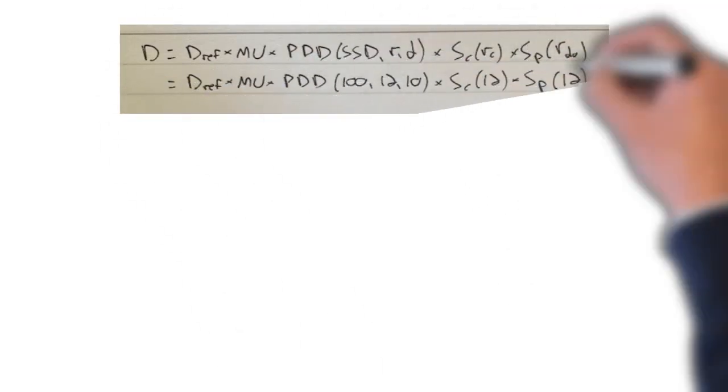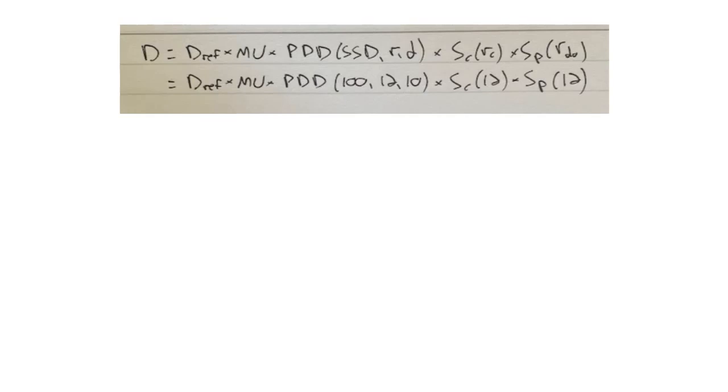Now we can put it all into equation form. What you see at the top is just the generic dose calculation equation with all the factors we don't need omitted — so we don't have a wedge factor or tray factor here because there's no wedge or tray. Then on the bottom I input the correct values for the SSD, the field size at the surface, the depth, the collimator field size, and the phantom scatter field size, which in this case is the same as the collimator field size because the field size at the isocenter was used to define the normalization point of the PDD.